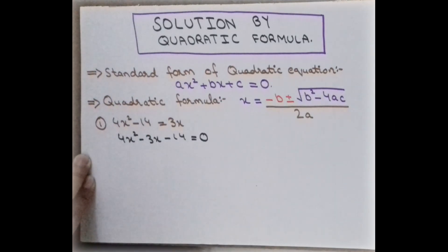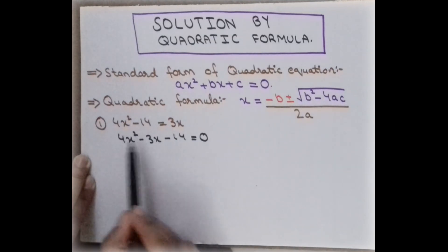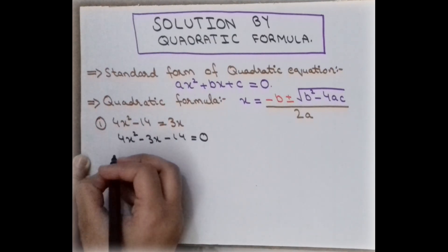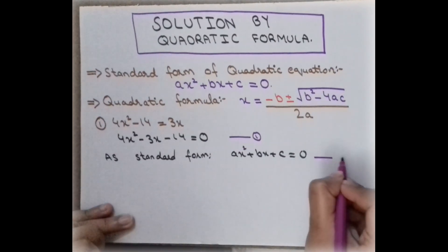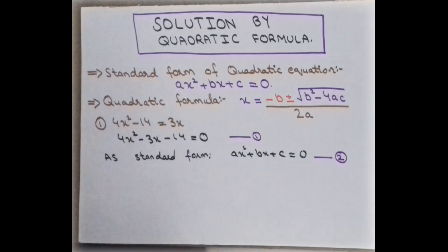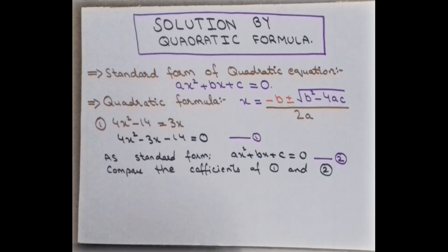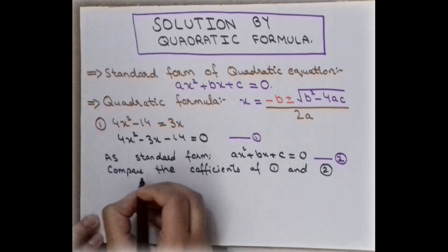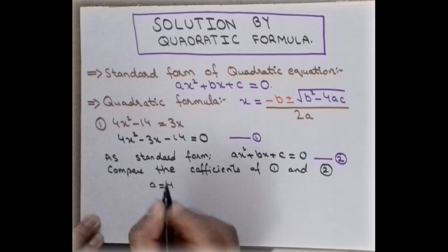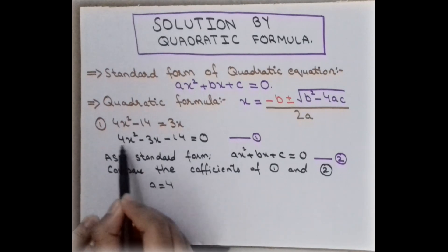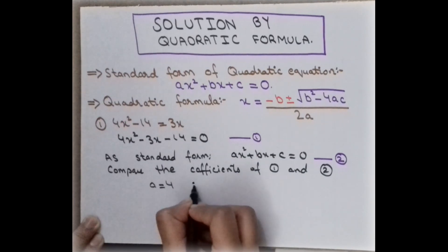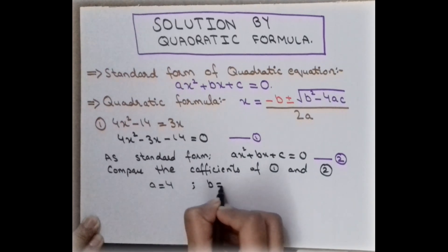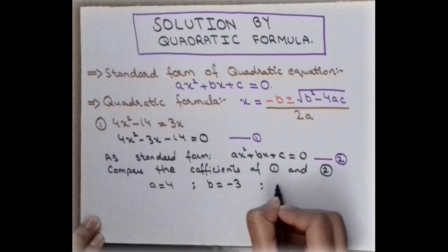The second step is to determine the coefficients a, b, and c. Compare the first and second equation — compare the coefficients of equation 1 and equation 2. So we have a which is equal to 4, because the coefficient of x² is 4. So a = 4.